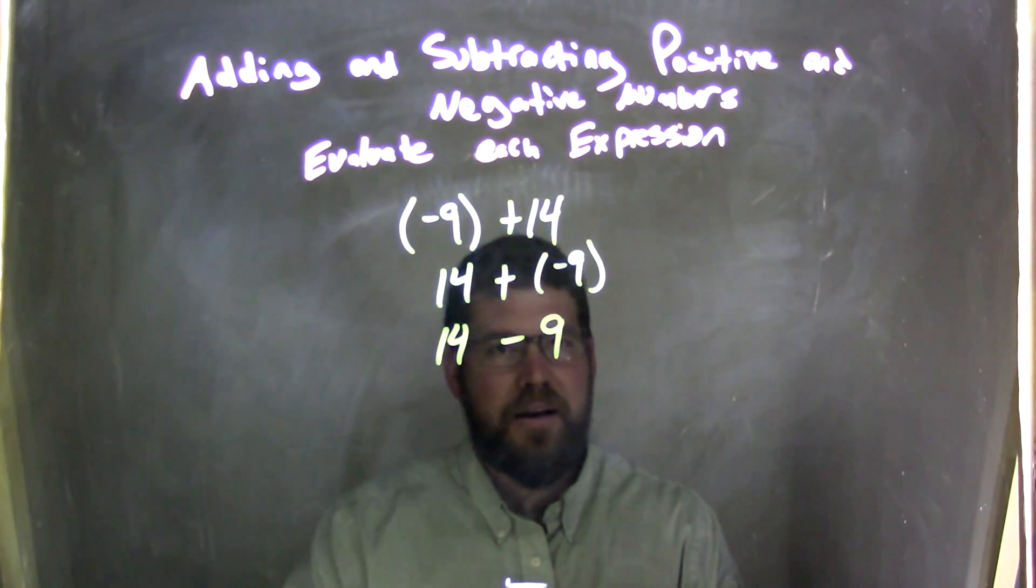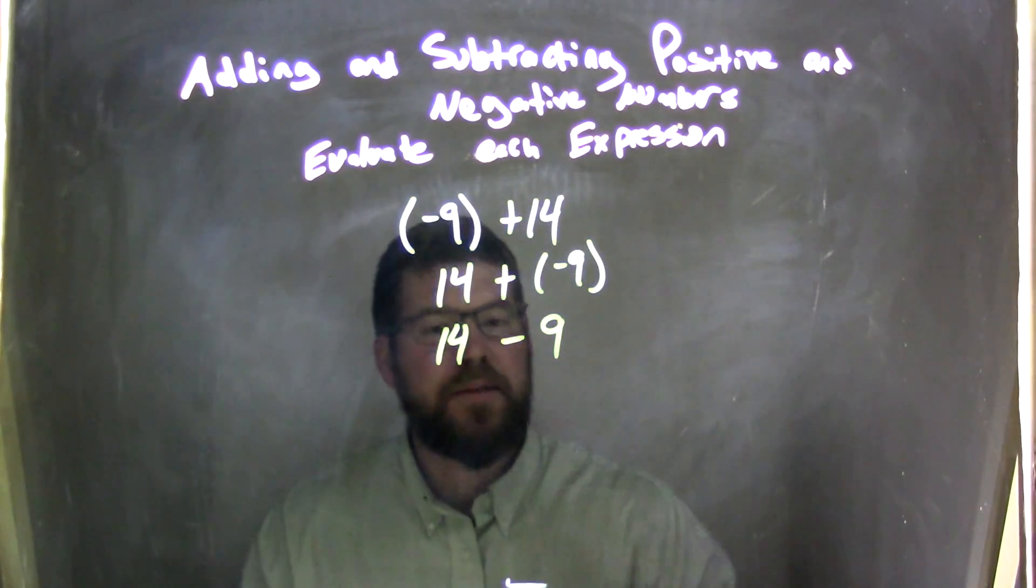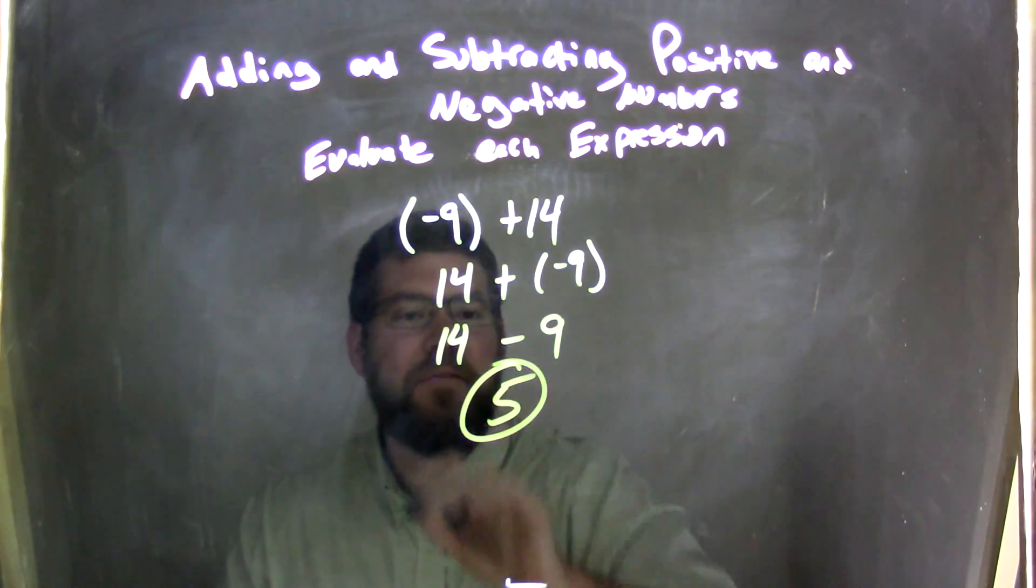Well, now 14 plus a negative 9 is the same thing as 14 minus 9. And 14 minus 9 is 5. And there's my final answer.